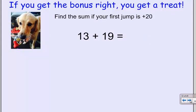So let's check out a bonus question. And if Scoop gets the bonus right, she gets the treat. And the question is, find the sum, which means addition, if your first jump is plus 20. So here's our challenge. I have 13 and my first jump is plus 20.